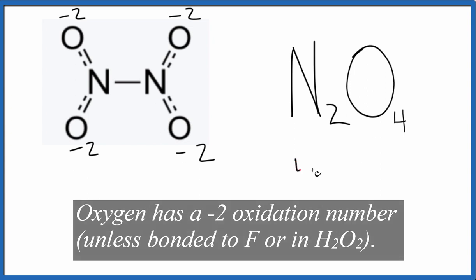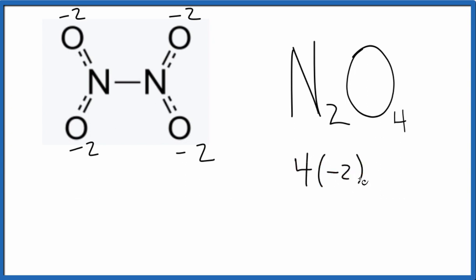And that means if we add these up, four times minus two, that gives us minus eight. So the oxidation numbers for oxygen, we add those up, we get minus eight.